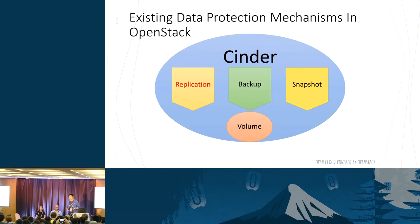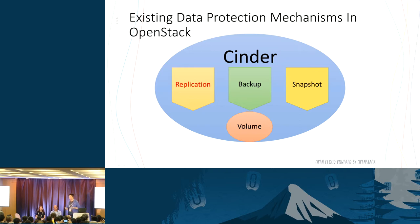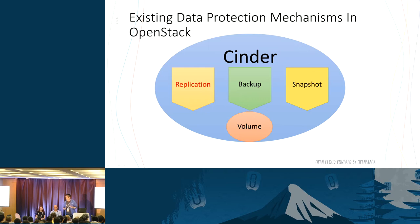Cinder has some important features like volume, snapshot, backup, and replication. You can create a volume from backup and also create a snapshot for a volume. We still need backup and replication for disaster scenarios. If a disaster happens, you may lose all storage devices and all snapshots. So you use backup and replication to recover your data to the disaster recovery site. As our topic suggests, we will talk more about replication.